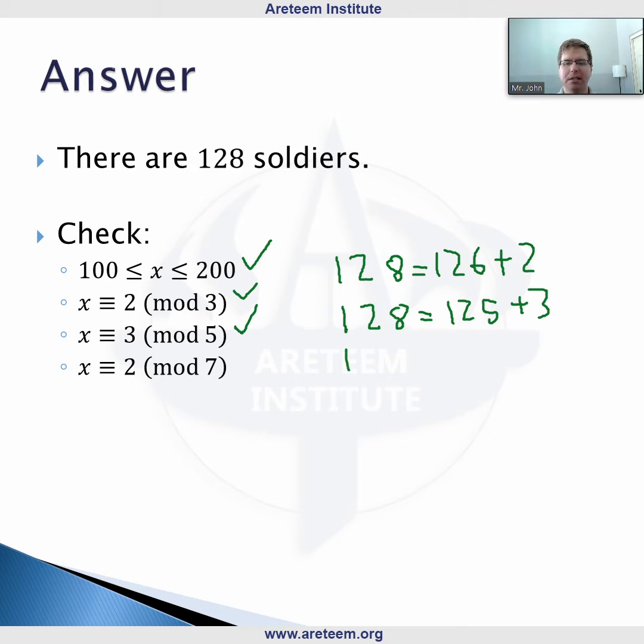And of course, 128 is 126, which was 42 times 3. Well, 42 is a multiple of 7, so this is a multiple of 7 plus 2, and we are good in that scenario as well. However, if you're watching this video and haven't seen this before, you're probably a little bit unsatisfied.